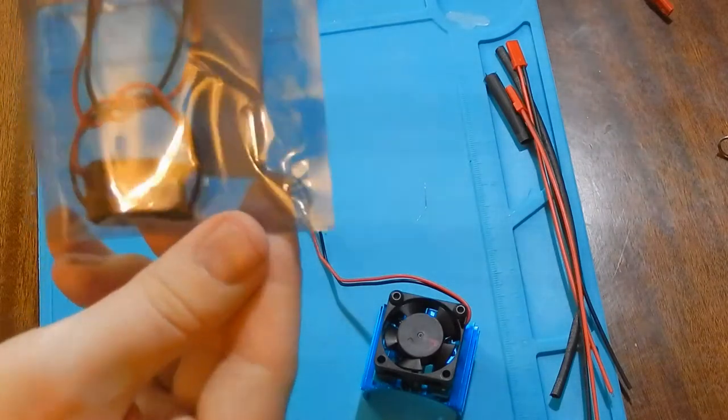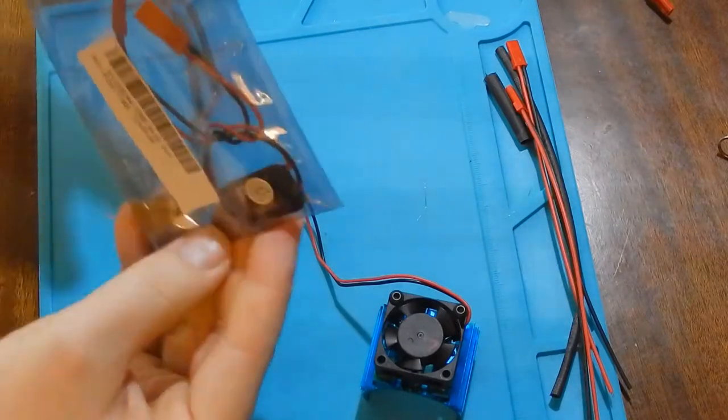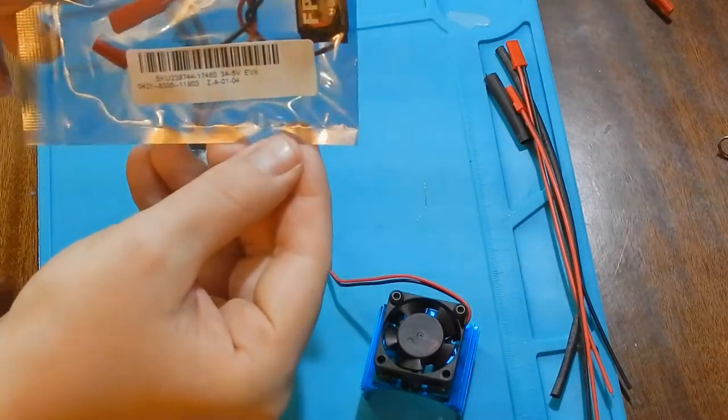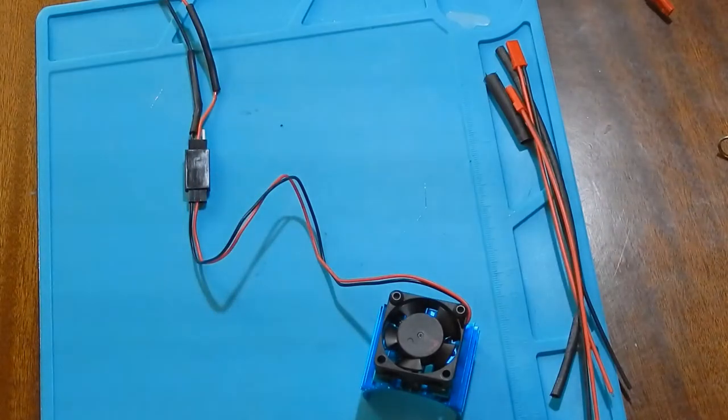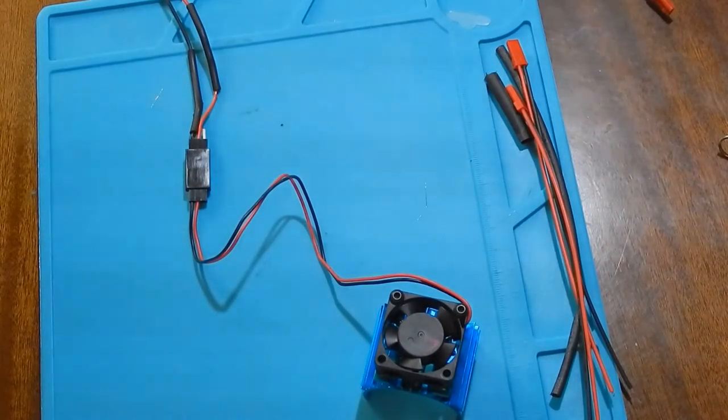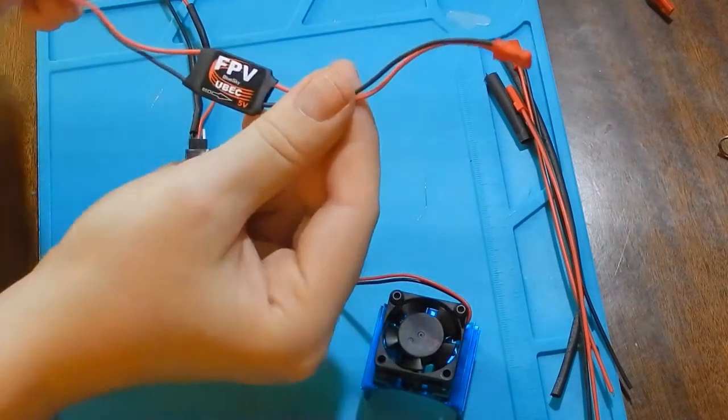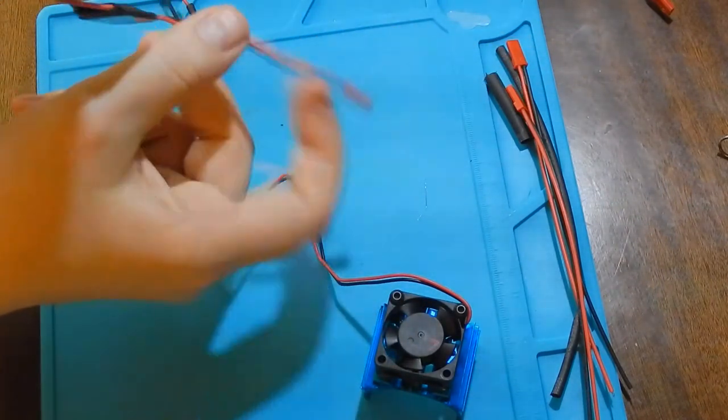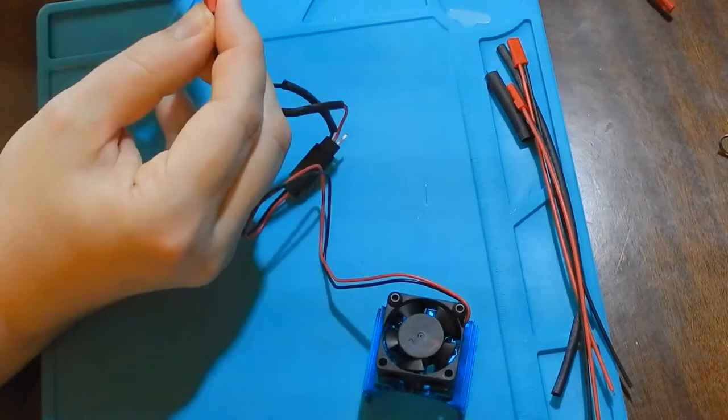This is a DC-DC converter step-down model UBEC 3A 5V for RC airplane FPV. I will use it for FPV camera or other equipment, for example, for LED lights of my car.